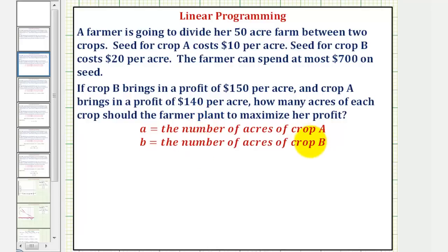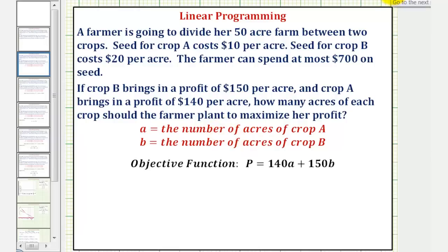Our goal is to maximize the profit. Crop B gives $150 of profit per acre, and crop A gives $140 per acre. This means our profit equation — also called the objective function — is P = 140A + 150B. We want to maximize this profit, but we must do so given the constraints.